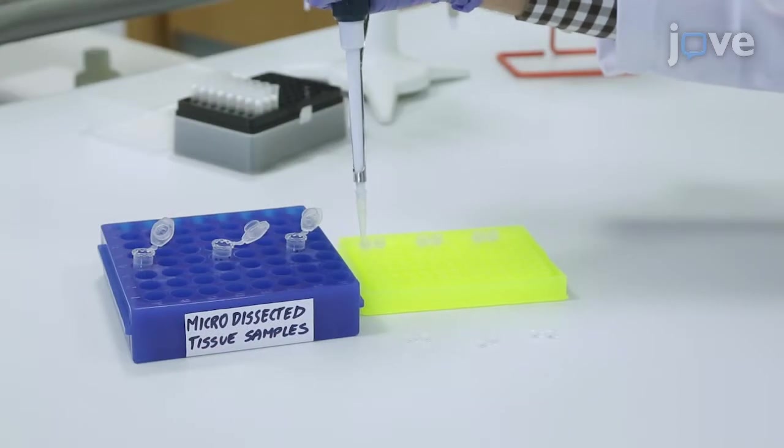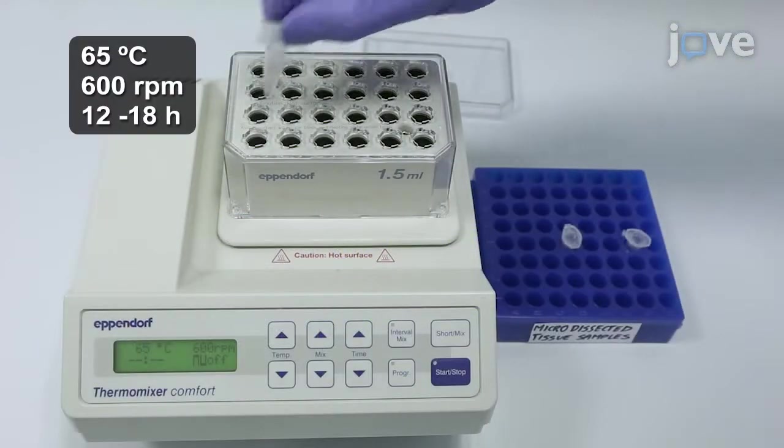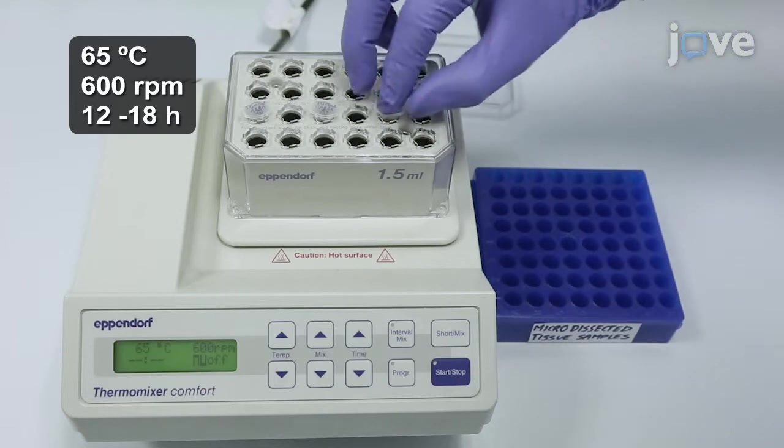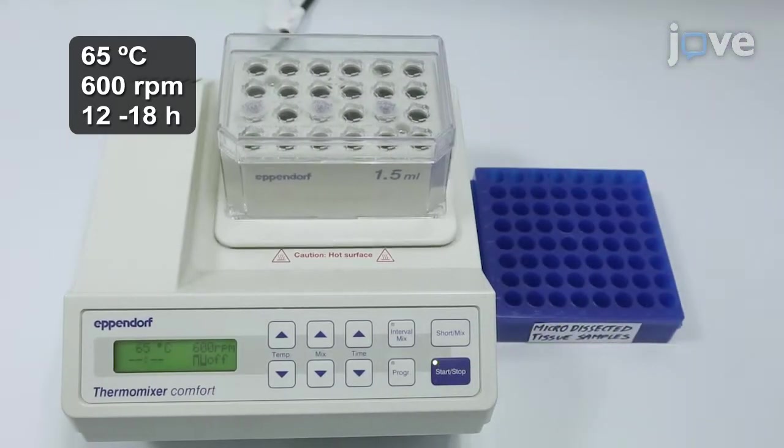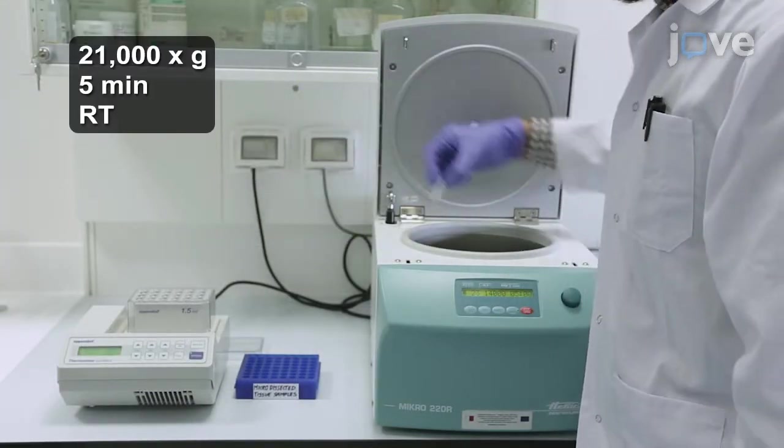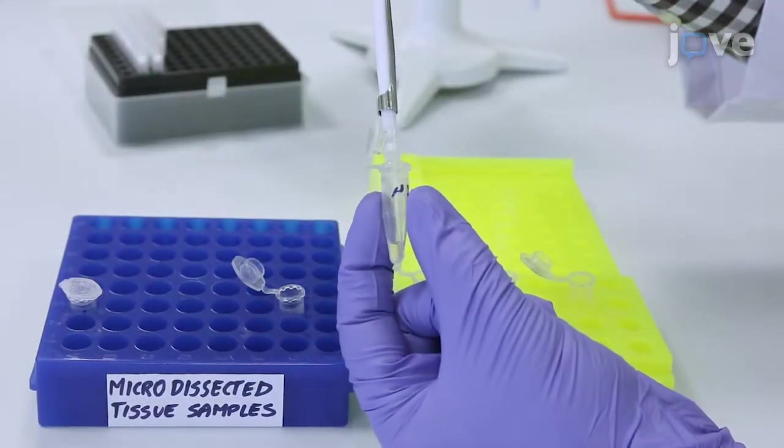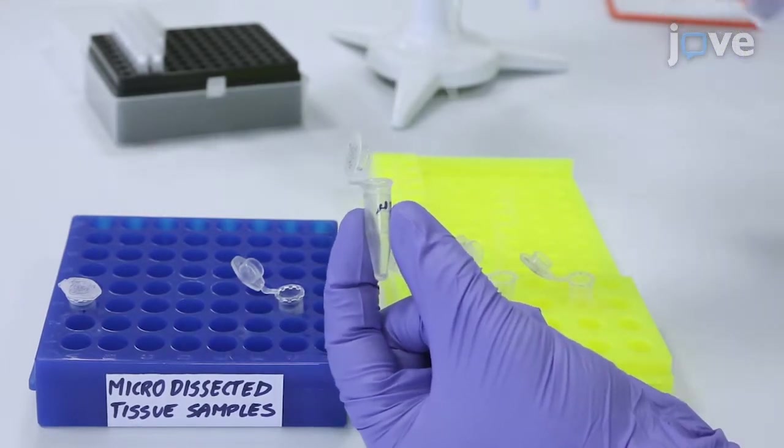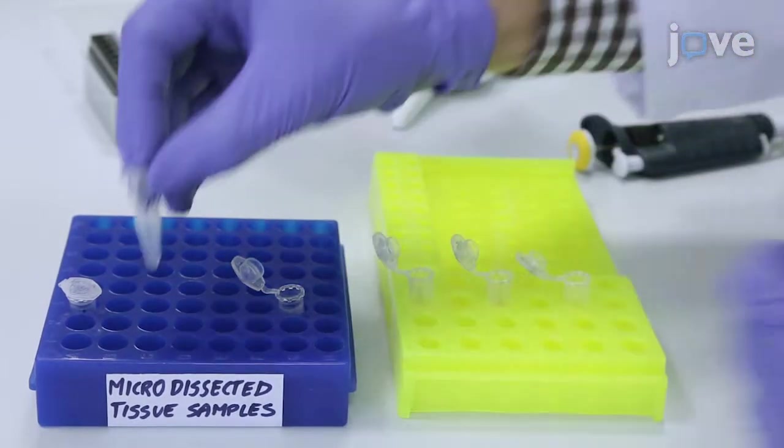Then transfer the samples to 1.5 milliliter tubes if required and place in a shaking heating block at 65 degrees Celsius. Shake them at 600 RPM for 12 to 18 hours. Then centrifuge the lysates at 21,000 G for 5 minutes at room temperature. Carefully collect the clear supernatant into a new labeled tube. Avoid transferring any tissue fragments. The supernatants can be stored at minus 80 degrees Celsius.